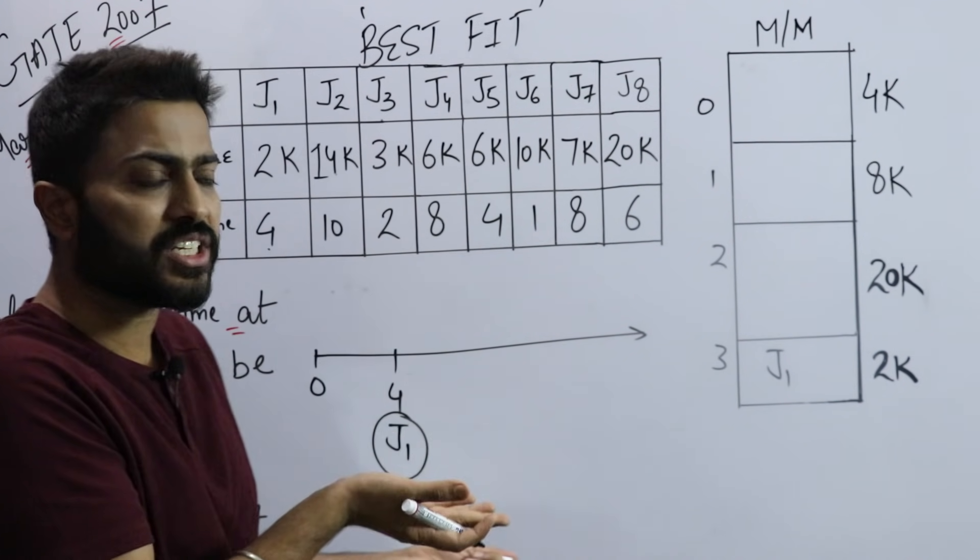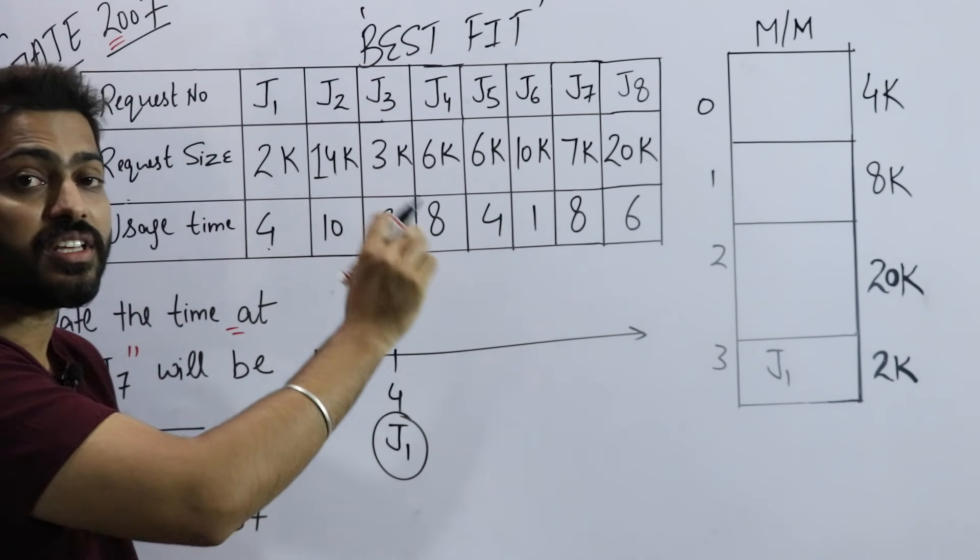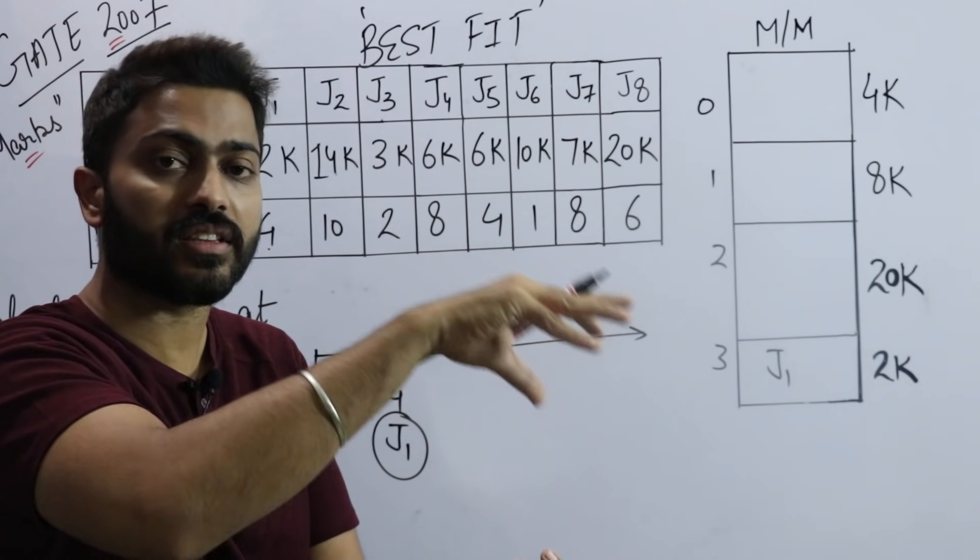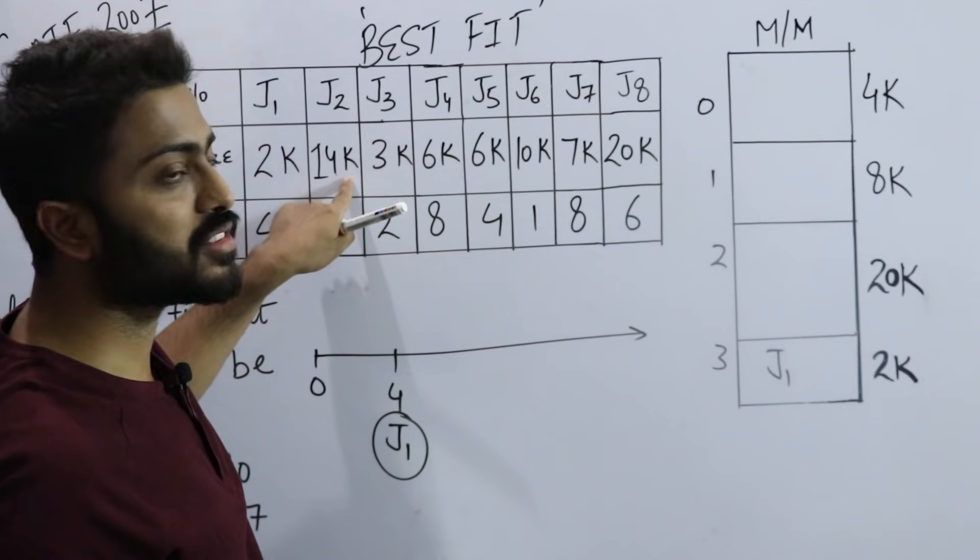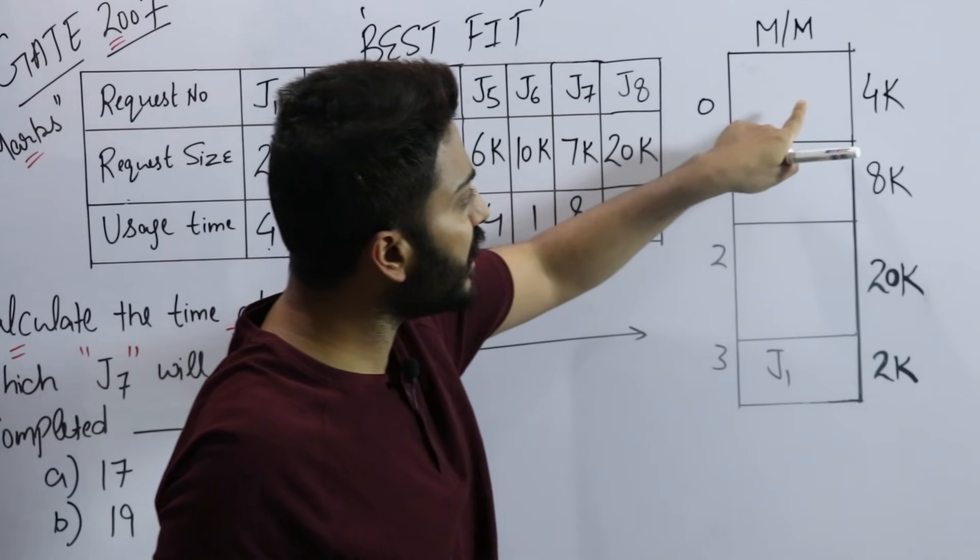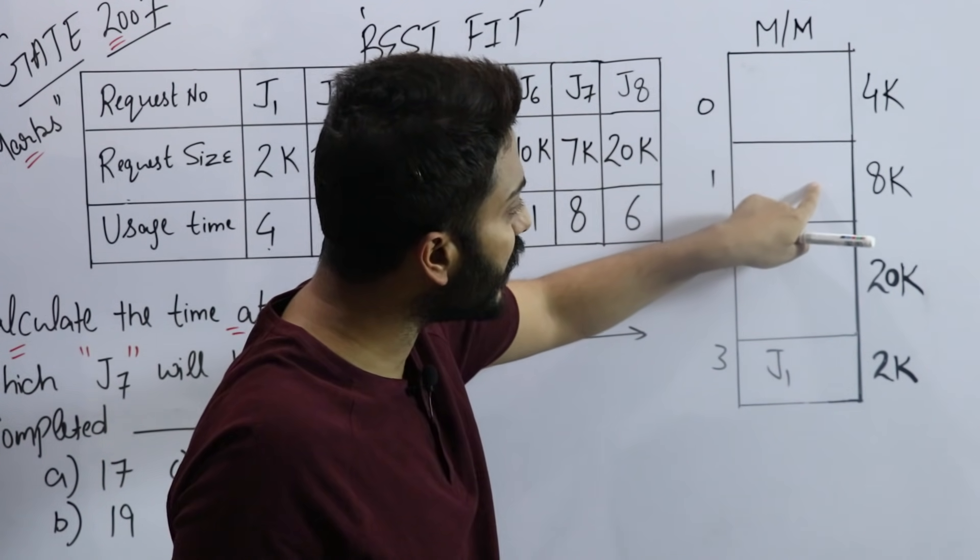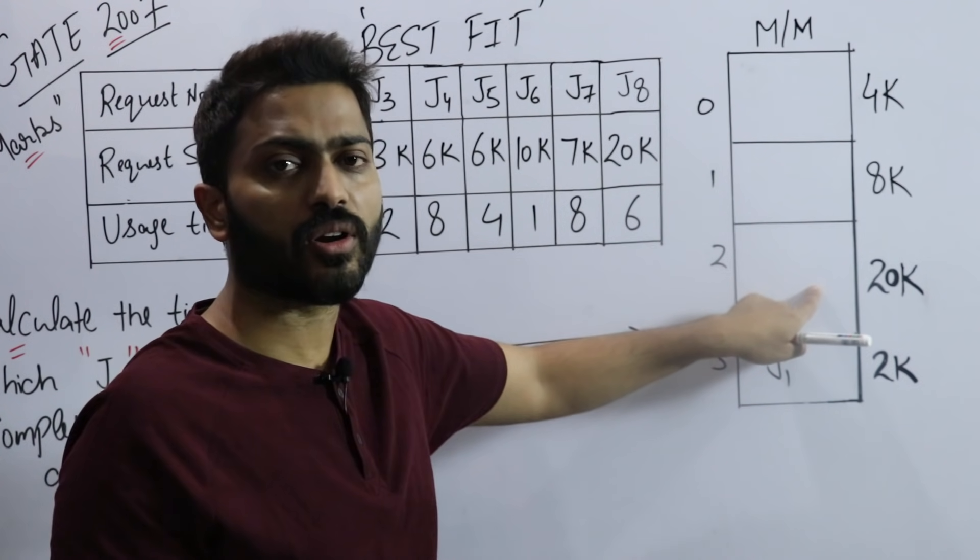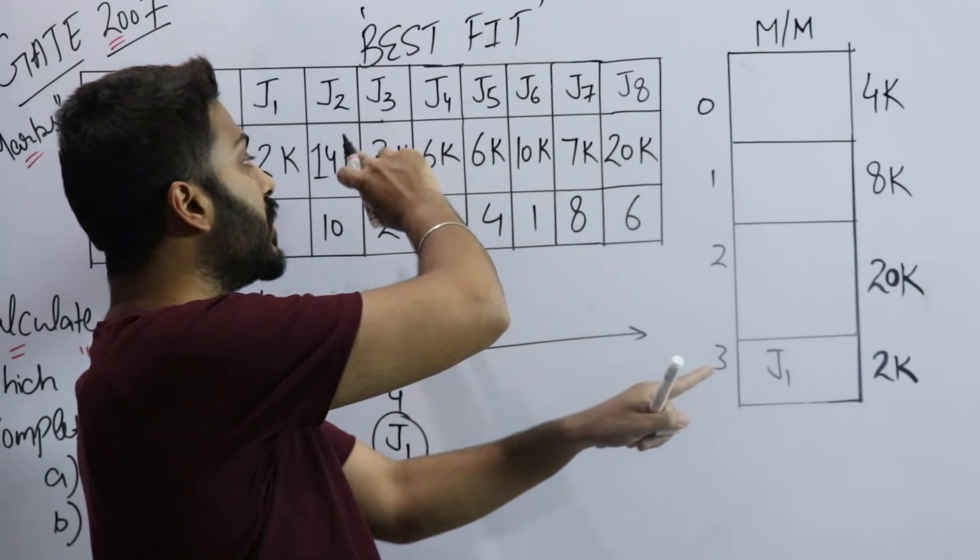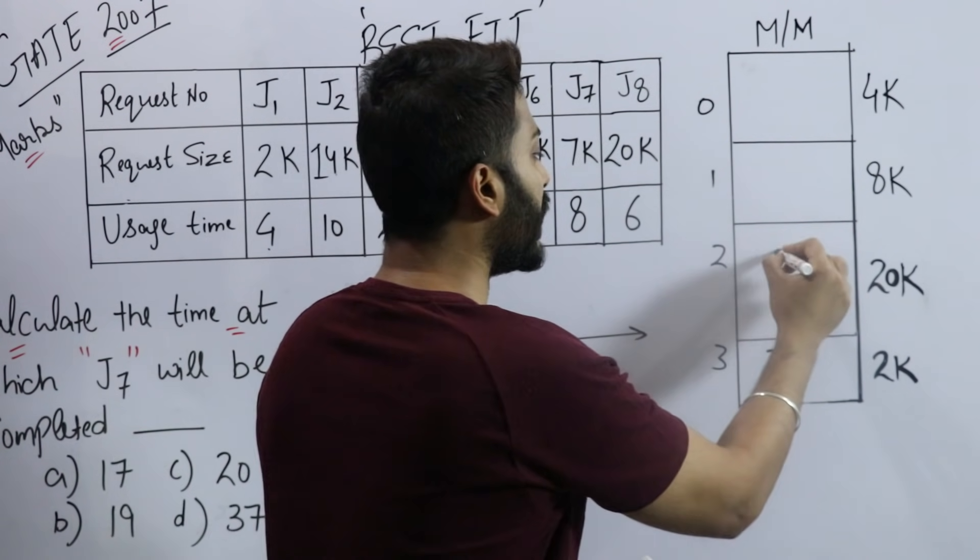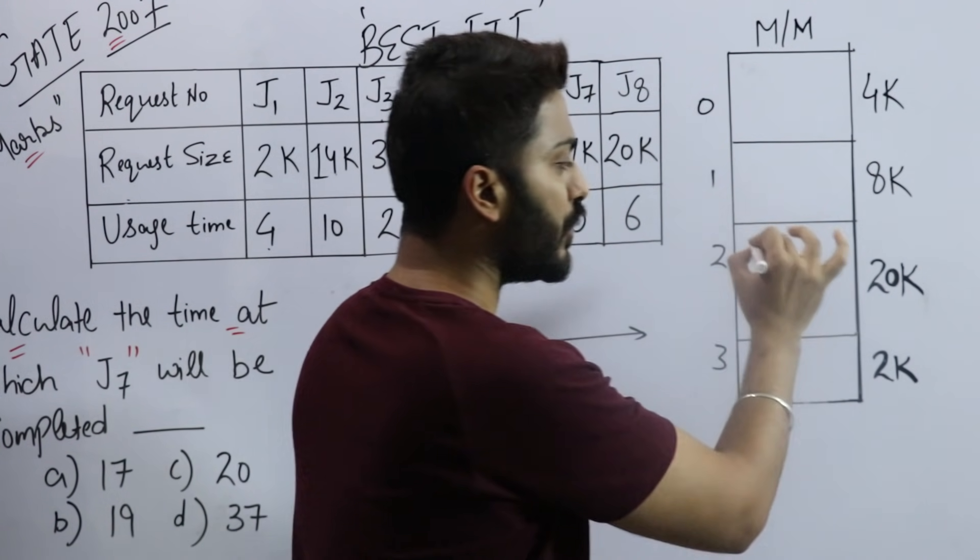Now J2. When J2 came, it also came at time 0. The size is 14k. 14k will not fit here, not here, not here. There's only one slot where J2 can fit. There's no concept of best fit here because there's only one slot where J2 can fit.